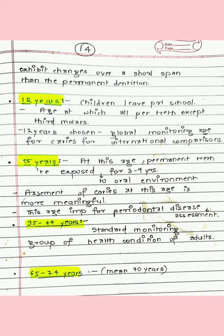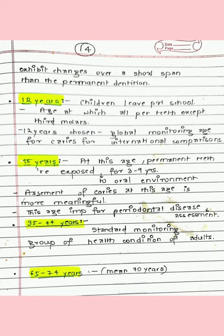Age group 35–44 years is the standard monitoring group for health conditions of adults. Age group 65–74 years data is needed for planning appropriate services for the elderly. The number of subjects in each index group ranges from a minimum of 25 to 50 per sampling site. For urban areas, select four sites in a city and two sites in two towns. 25 subjects are sufficient when caries and periodontal disease levels are low; when moderate or high, 40–50 subjects should be selected. Prevalence is estimated first to determine sample size.